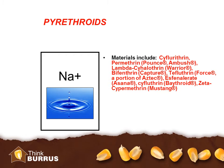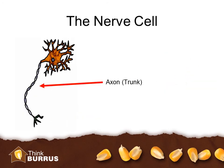Pyrethroids are basically synthetic versions of naturally occurring insecticides that are produced in mums. They usually break down more rapidly than other insecticides. The correct term for the trunk of a neuron is the axon, and pyrethroids are therefore sometimes also called axonic nerve poisons.